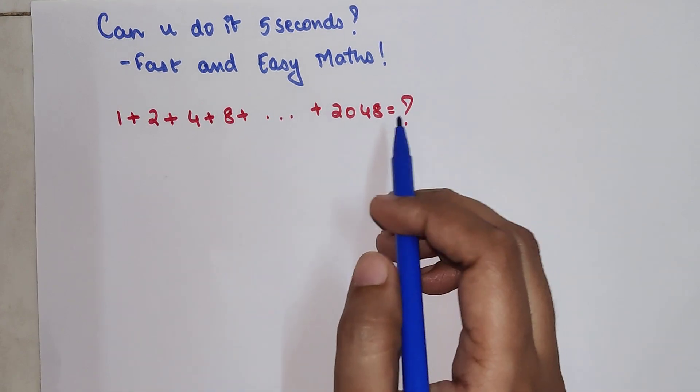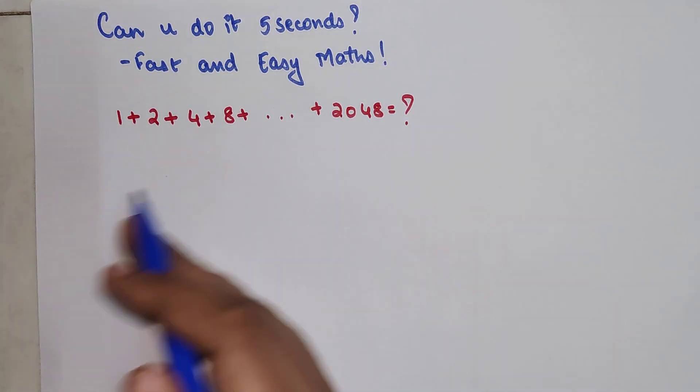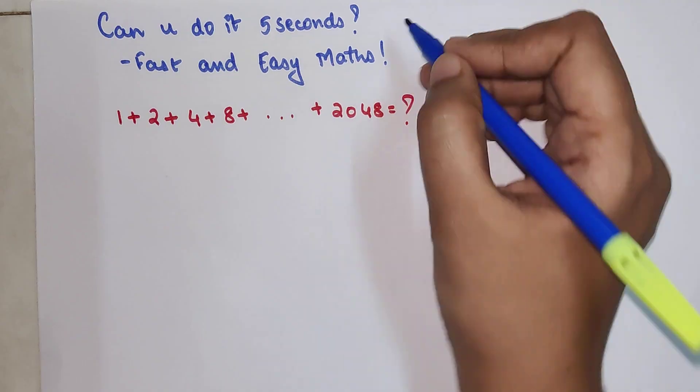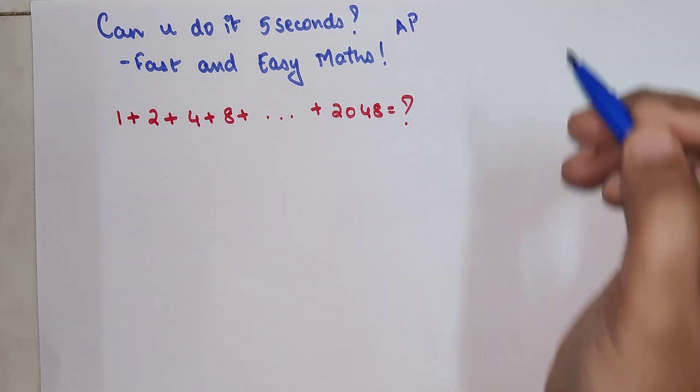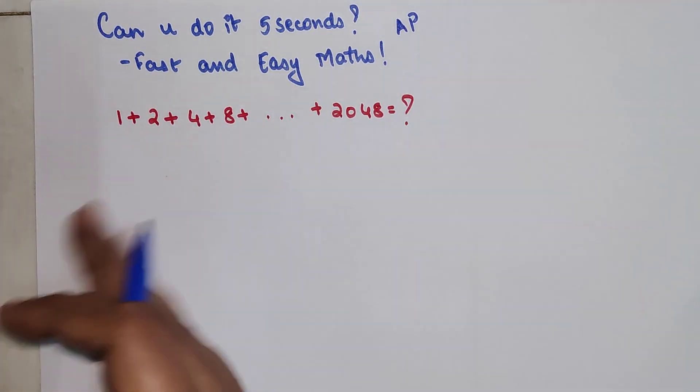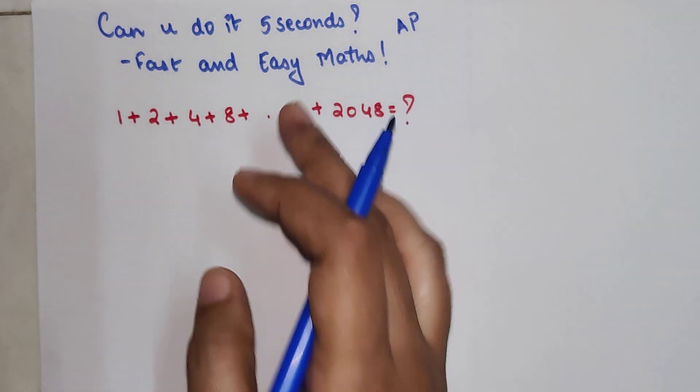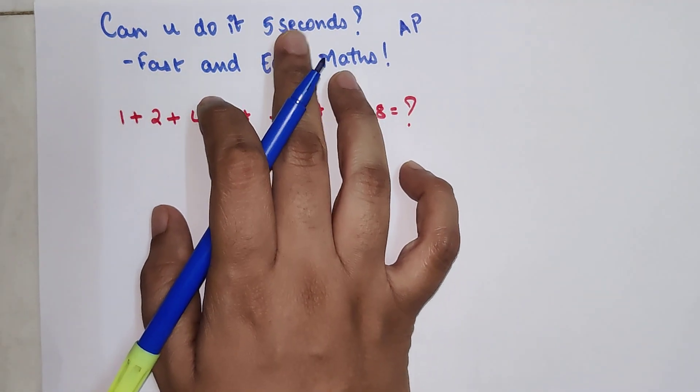Now if you see, when you have to do this it's very difficult, right? Either you use the principles of AP or something like that to get the answer, but how will you be able to do this in 5 seconds?